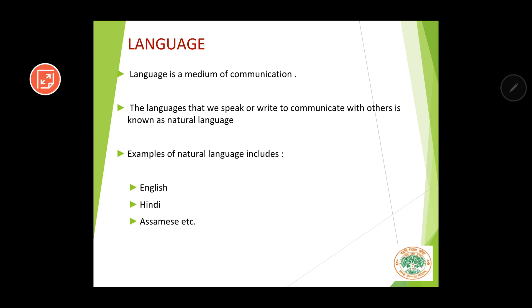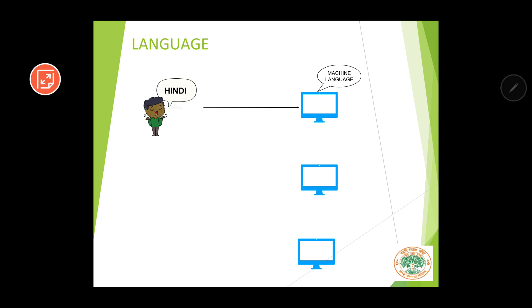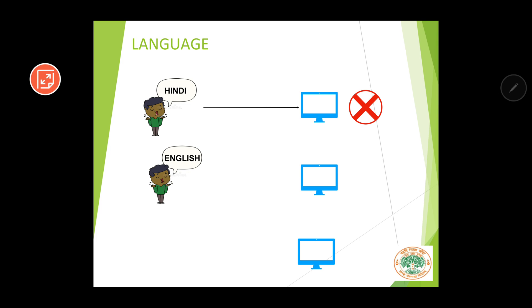Here we are studying computer science. The problem is that computers cannot understand natural language. Computers understand only one type of language, which is known as machine language. Let's say you are trying to communicate with the computer in Hindi, but Hindi is a natural language and computers cannot understand natural language. Let's say you are trying to communicate with the computer in English, but English is also a natural language and computers cannot understand natural language.